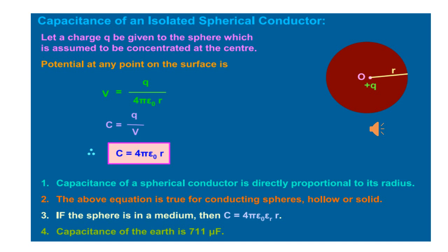1 farad is a large unit of capacitance, so it is not possible to have a single isolated conductor of very large capacitance.